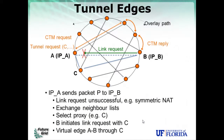In the connect-to-me request, the link request fails, for example, because A is a symmetric NAT that does not allow B to connect to it. A and B will exchange their neighbor list. If they decide on a proxy C, and A already has a connection to C, B creates an edge to C and they set up this virtual edge from A to B through C.